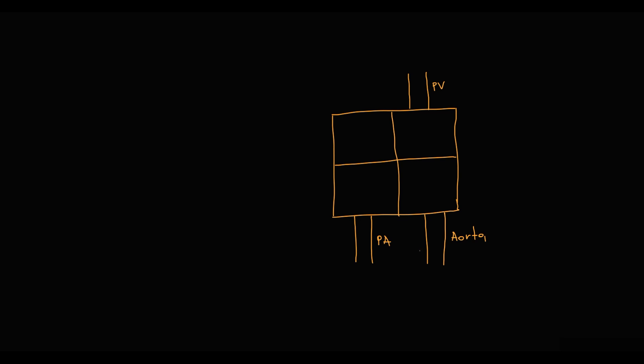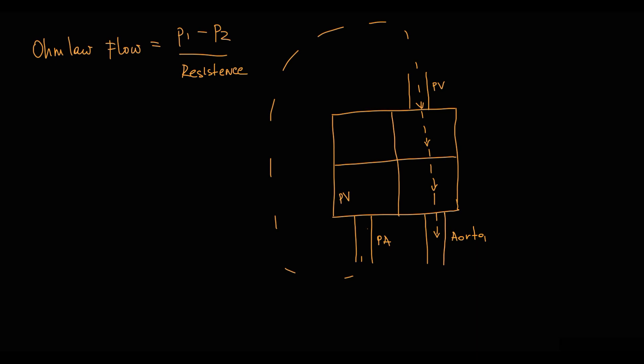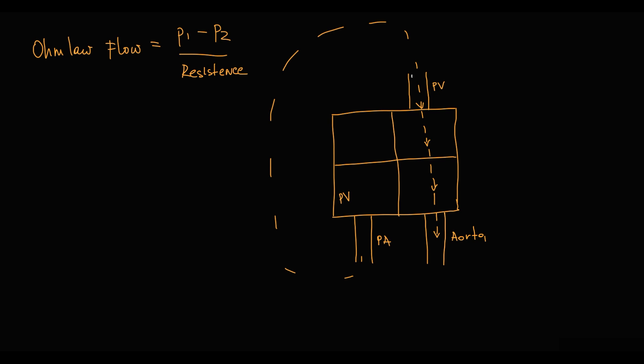To explain this: blood moves from the right ventricle to pulmonary arteries, then to veins, then to the left atrium, left ventricle, and from the left ventricle to the aorta. According to Ohm's law, flow equals the pressure difference between two points divided by resistance. In relation to flow from pulmonary circulation to the left atrium, P1 is pressure in pulmonary vessels and P2 is pressure inside the left atrium.